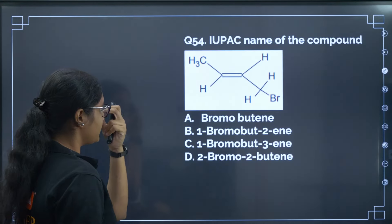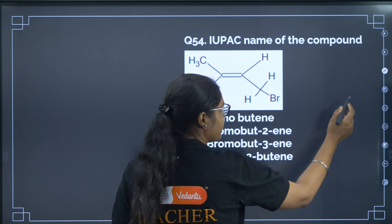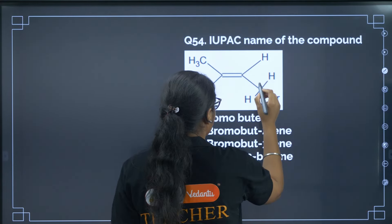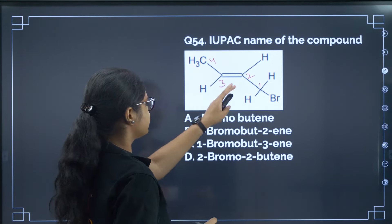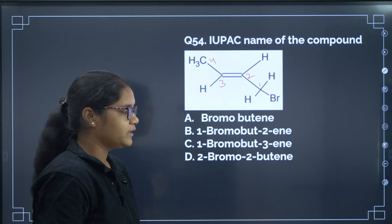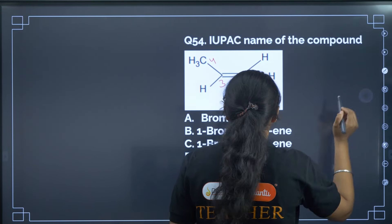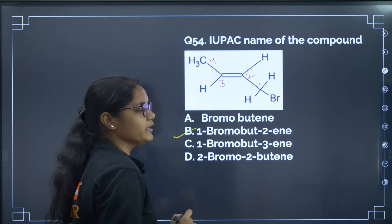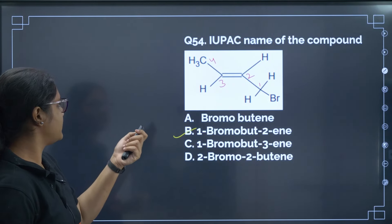Question 54: IUPAC name of the given compound. Find the longest chain: 1, 2, 3, 4 carbons. There is a double bond at position 2 and bromine at position 1. The IUPAC name is 1-bromo-but-2-ene. Correct answer is option B — a very direct question.